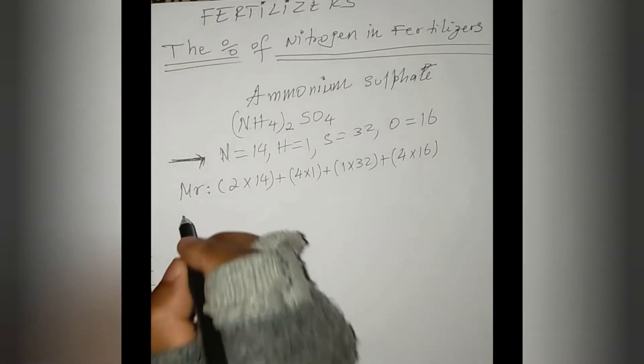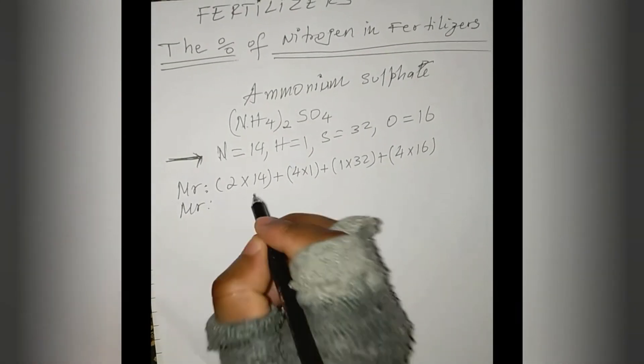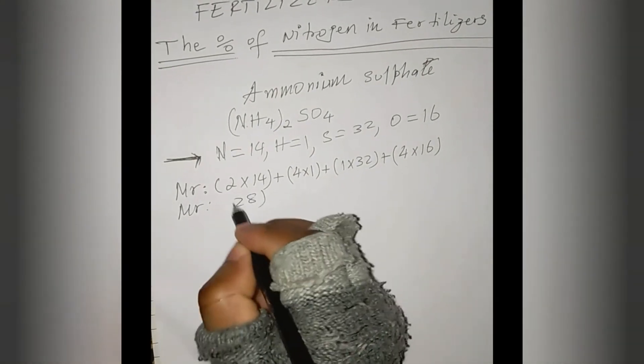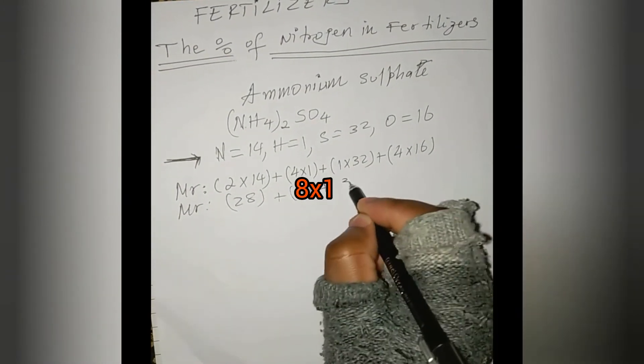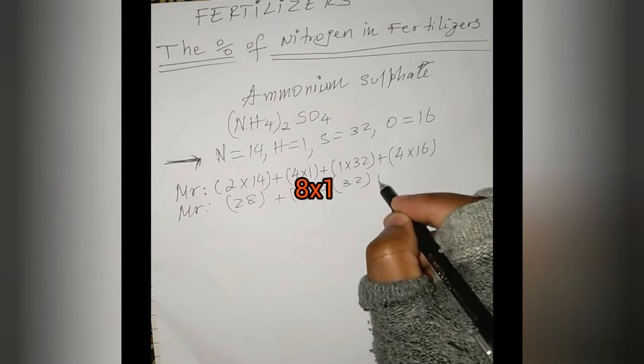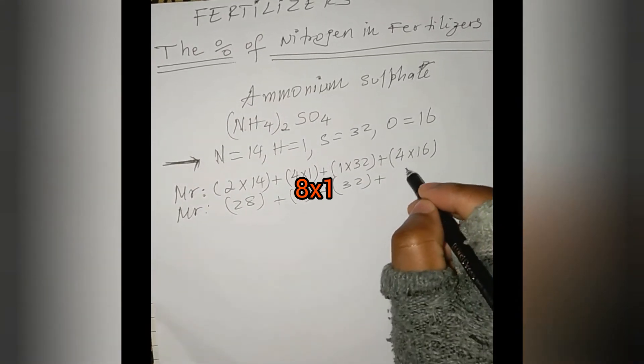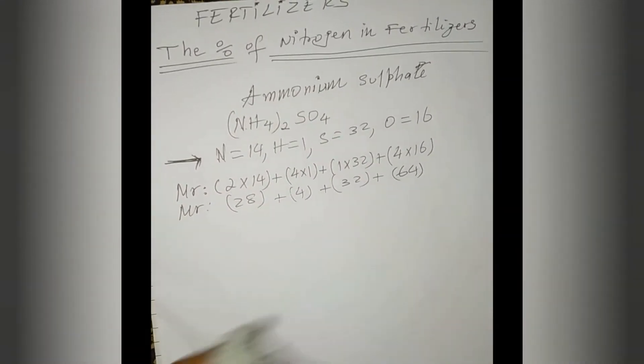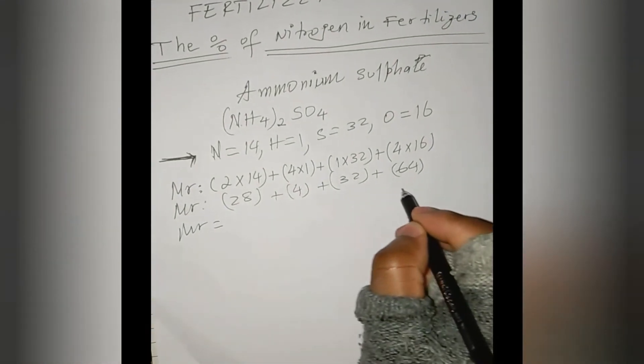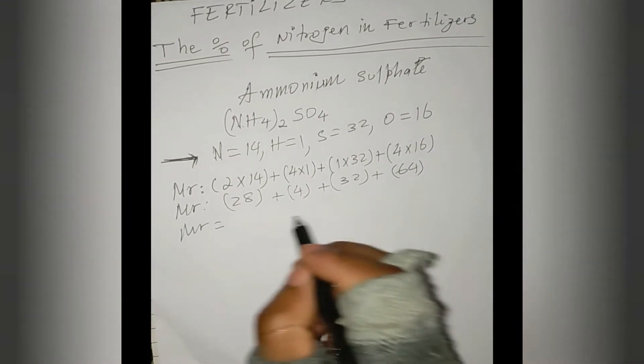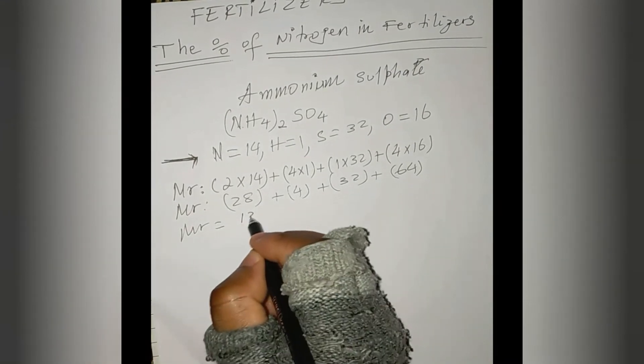Next, we just sum up these numbers. This number will be equal to 28 plus 4 plus 32 plus 64. If we add them up, this will be equal to 132.